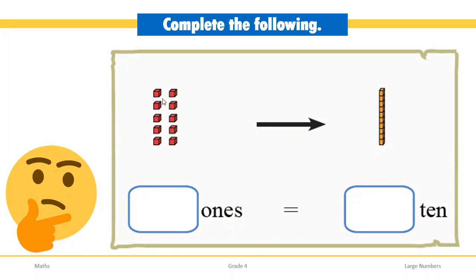Here we have 10 single blocks. When we combine these 10 single blocks, it will form a large block made up of 10 single blocks. So we can see that 10 single blocks make 1 ten. Therefore, 10 ones is equal to 1 ten.